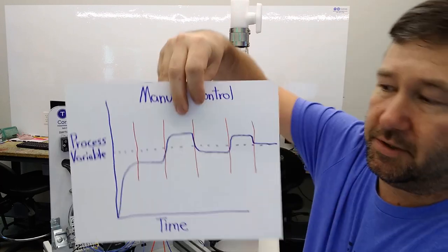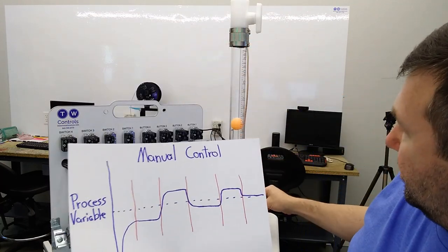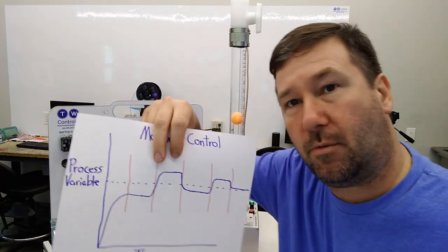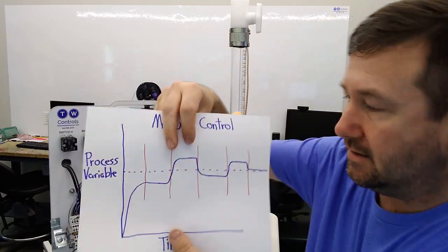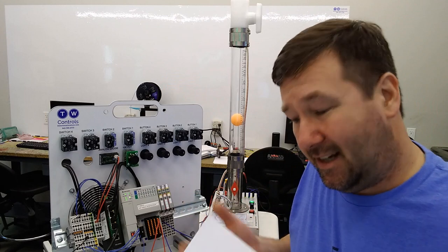We're going to talk about manual control. What is wrong with seeing that okay I'm a little low here and let me just crank this up a little bit and walk away and do a few other things and oh now I'm a little high and drop it back down. Why is that not acceptable?